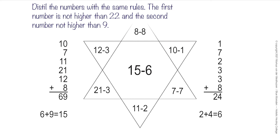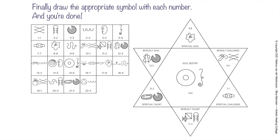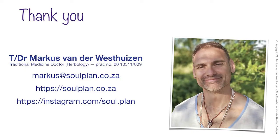Next, map out the symbols and place them in their correct positions — and that's it, you've mapped a chart. I encourage you to try this; it starts off slow but speeds up the more you get used to it. If you want to learn more about Soul Plan, you can visit my website soulplan.co.za. I also teach Soul Plan, so if you're interested you can let me know.